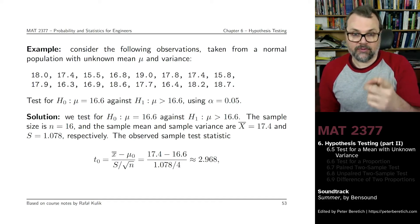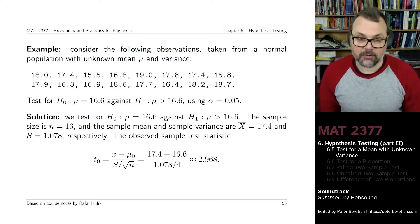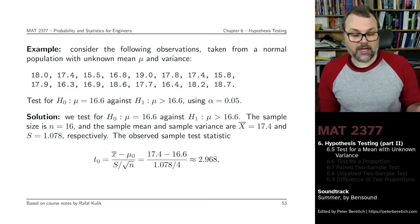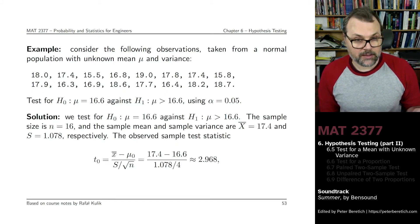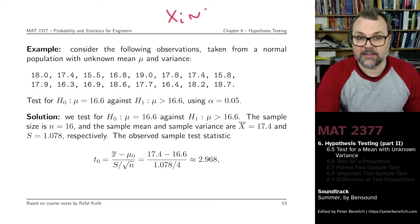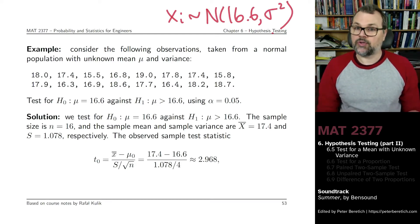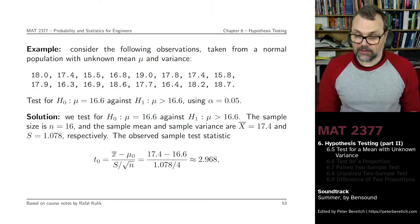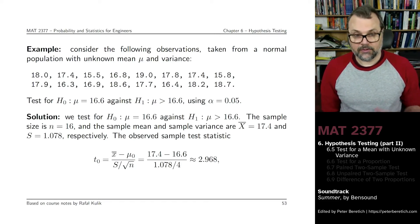We have sixteen observations in total. What I want you to do is to test for the null hypothesis that the true population mean is 16.6 — that all of these x-i's come from a distribution that looks like this — against the alternative that the true population mean is greater than 16.6. We'll do the test at a five percent significance level. So we know what the sample size is: it's 16.